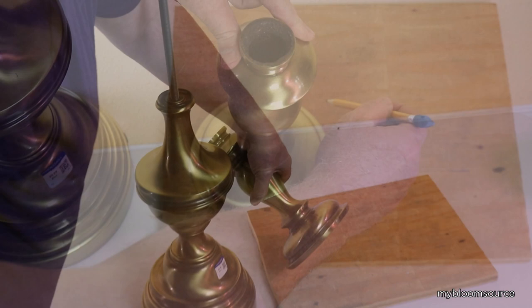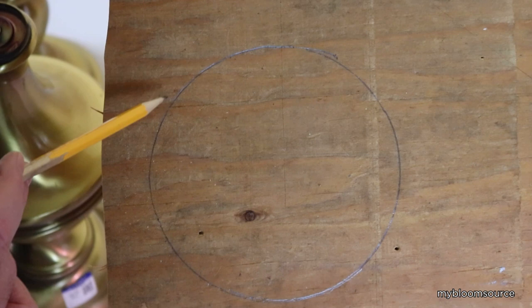We then removed enough of the wood to accommodate the threaded pipe and fastener. We primed and painted the spacer.